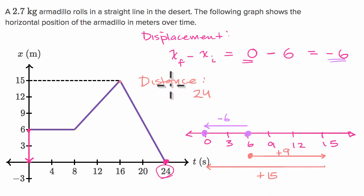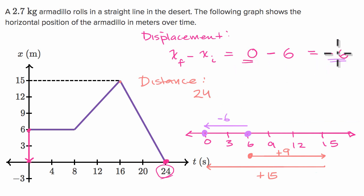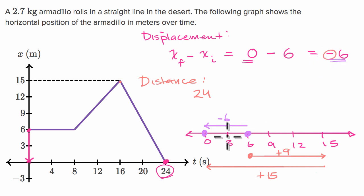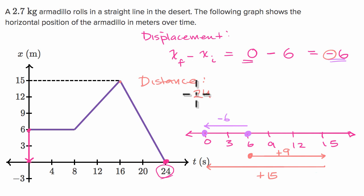Even though the armadillo traveled a total distance of 24 meters — its entire path was 24 meters long — its net shift, its displacement, is six meters to the left, or negative six. The negative number implies direction: to the left on our number line. Distance doesn't tell you about direction — it just tells you the absolute magnitude of the total path traveled.